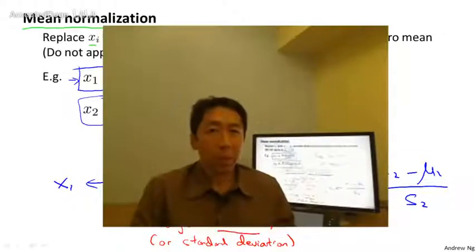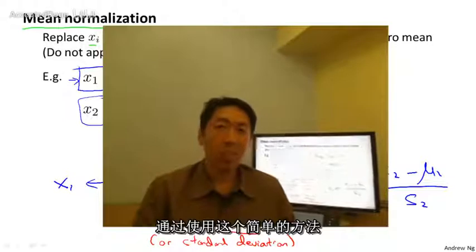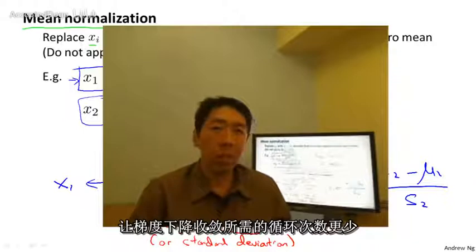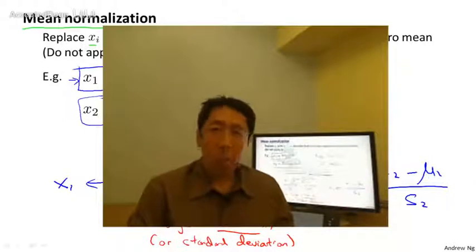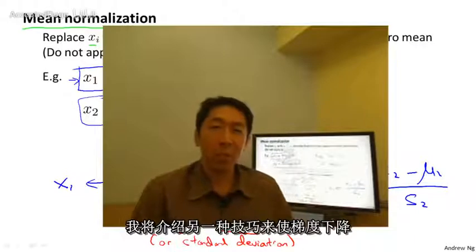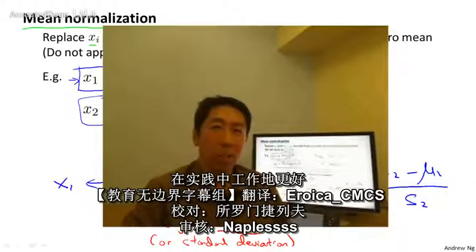So now you know about feature scaling, and if you apply this simple trick, it can make gradient descent run much faster and converge in a lot fewer iterations. That was feature scaling. In the next video, I'll tell you about another trick to make gradient descent work well in practice.